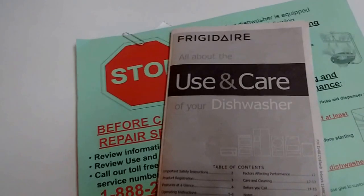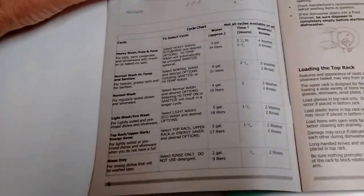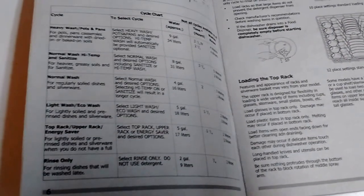One of the best things you can do is refer to your owner's manual. If you look under the operating instructions, you'll see that there are multiple modes that you can run your dishwasher on.